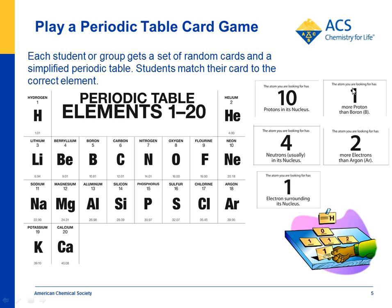How about this one? The atom you're looking for has one more proton than boron. So they would look at boron, which has five protons, and carbon has six — so that must be carbon. They would put this card in the carbon pile.